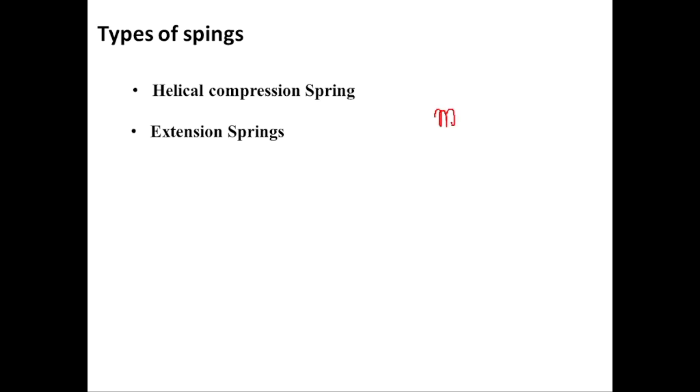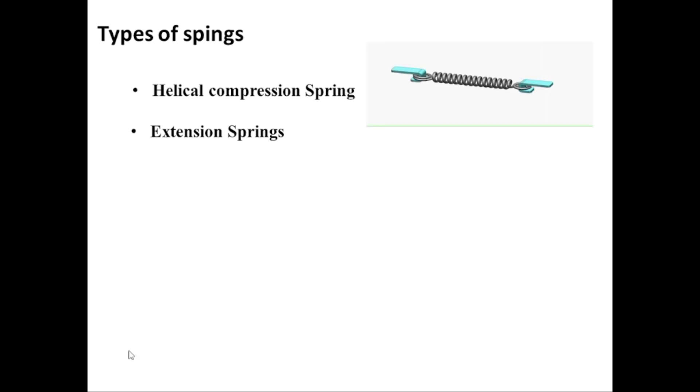The next type is the helical extension spring. It is also helical in shape. Extension means its length will increase when forces are exerted in opposite directions. If you hold it from the end points and exert tensile forces away from one another, it will extend. Here is the animation showing it held at one end and forced to extend.